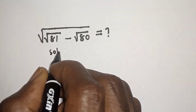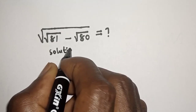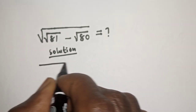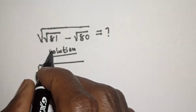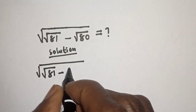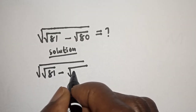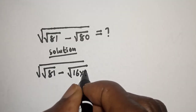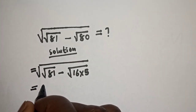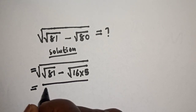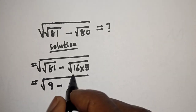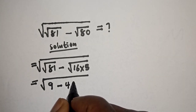Solution: square root of (square root of 81 minus square root of 80). We rewrite 80 as 16 multiplied by 5. This is equal to square root of (square root of 81 is 9, minus square root of 16 is 4, then root 5). So we have square root of (9 minus 4 root 5).